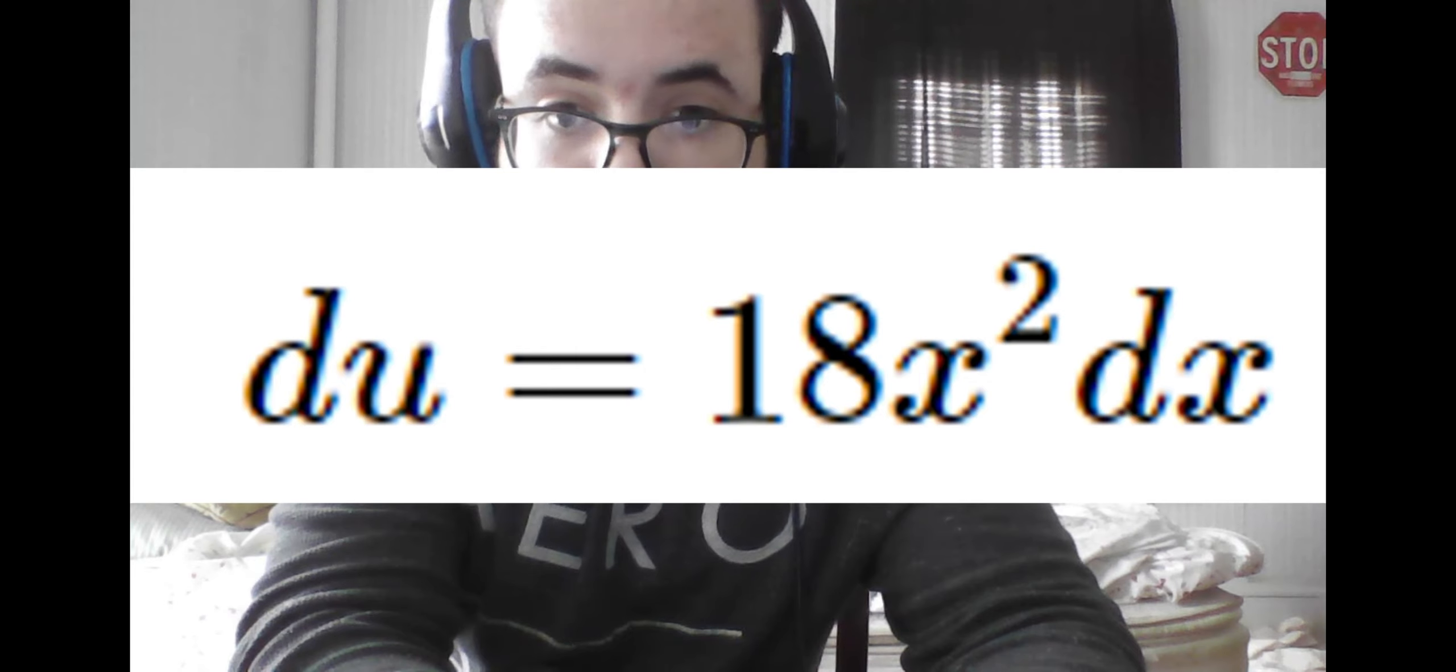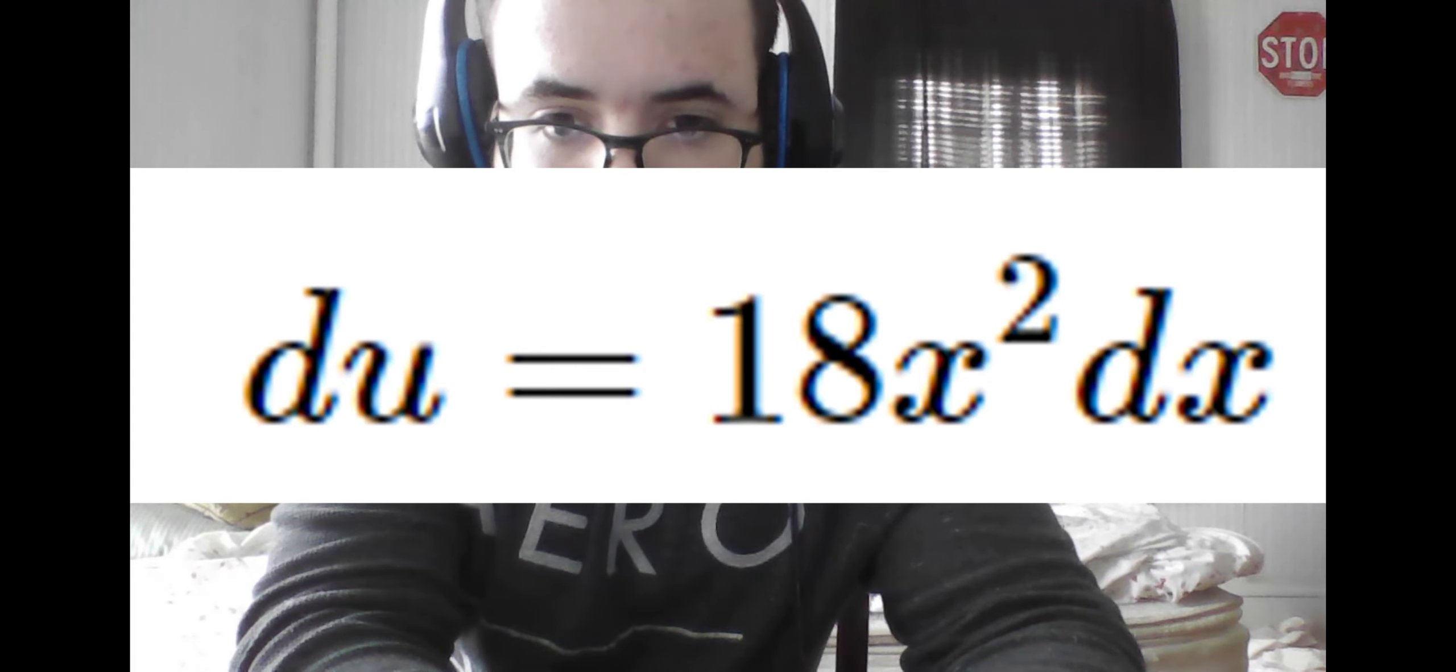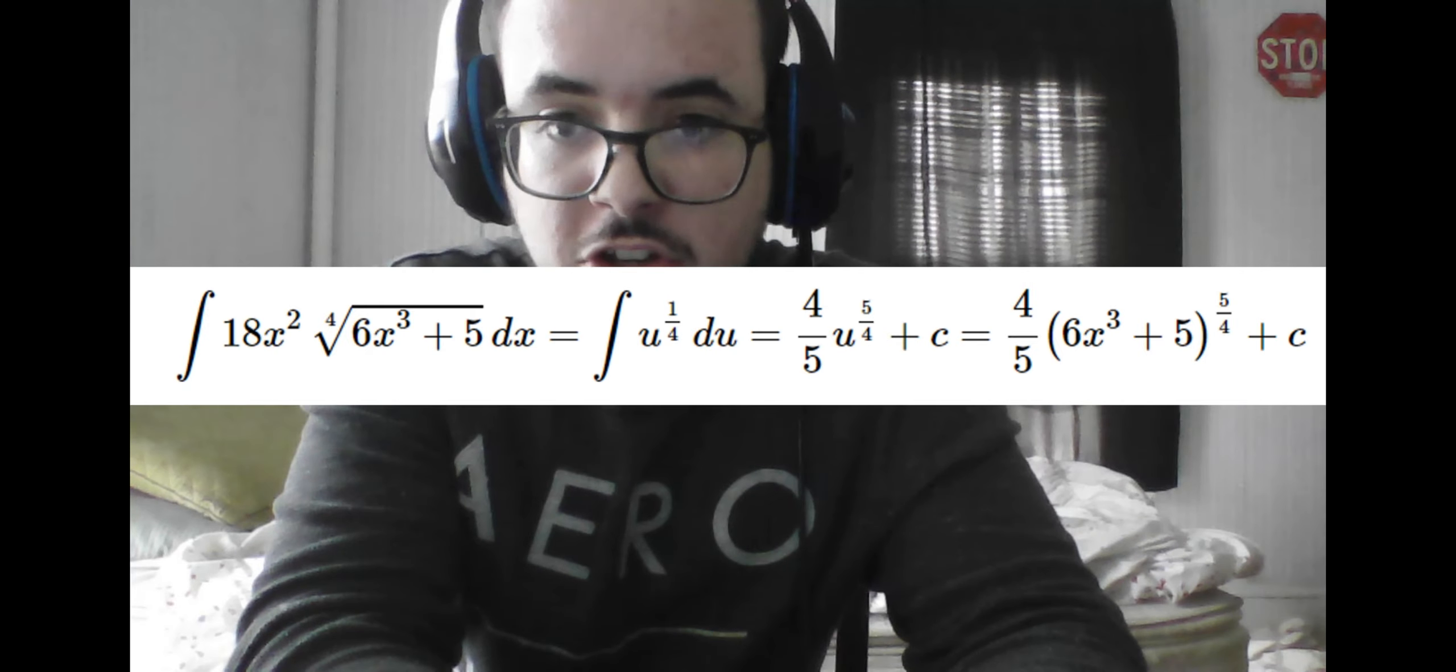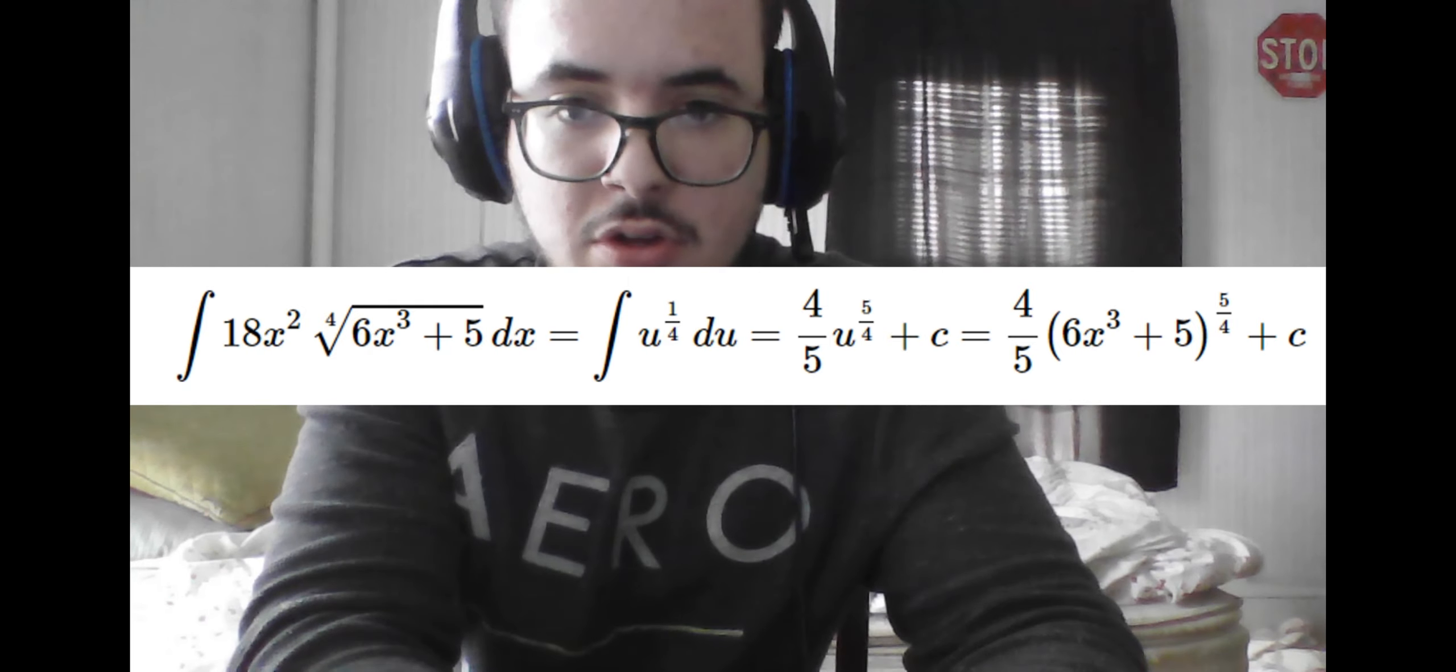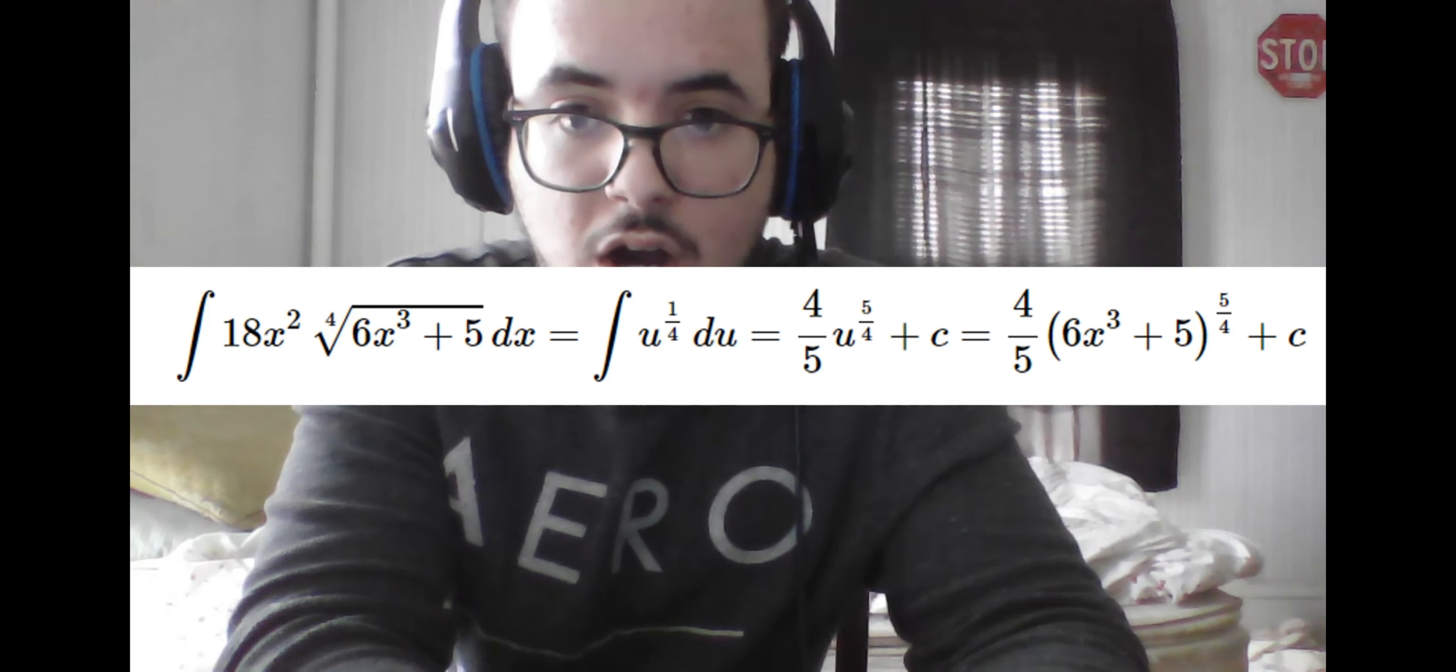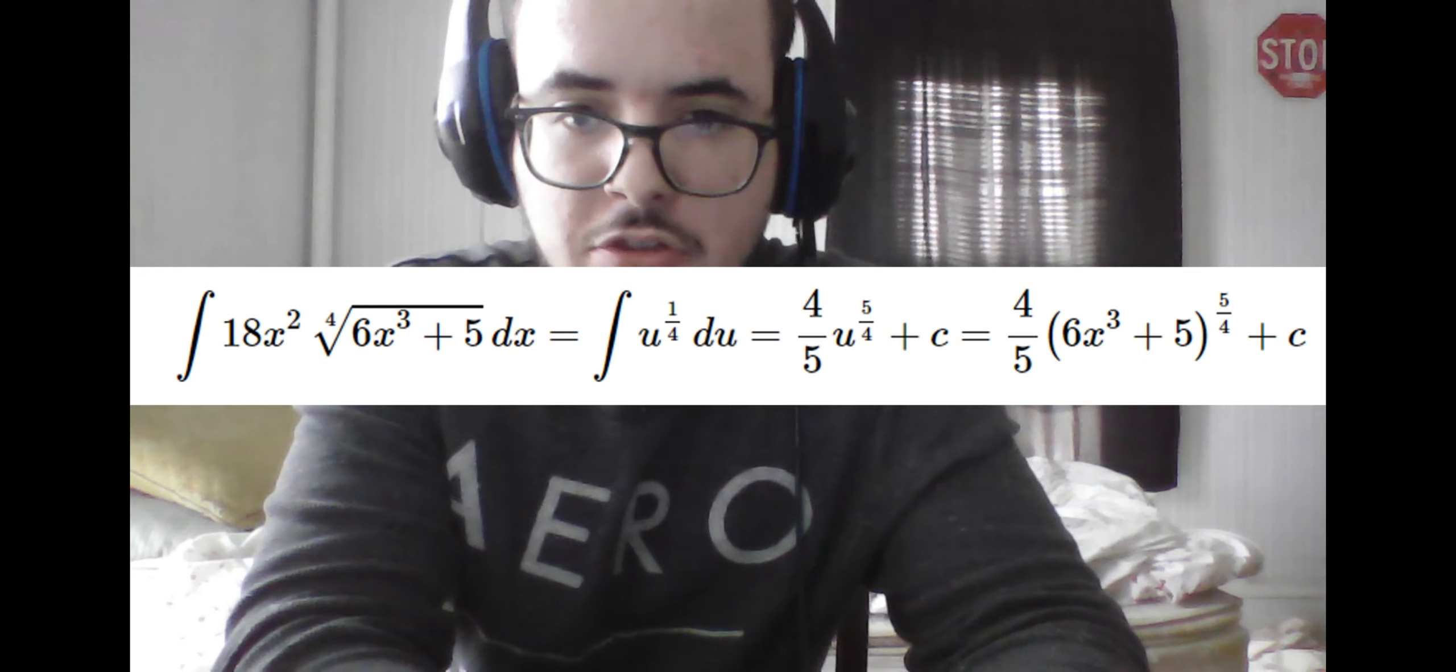So that way, we can take the integral with respect to u rather than x, as we will do just now. We see that change in u is given right off the bat in the original integral. So now we make the appropriate placement of u for the 6x cubed plus 5, and it becomes a simple integral of u raised to the one-quarter power integrated with respect to u rather than x.